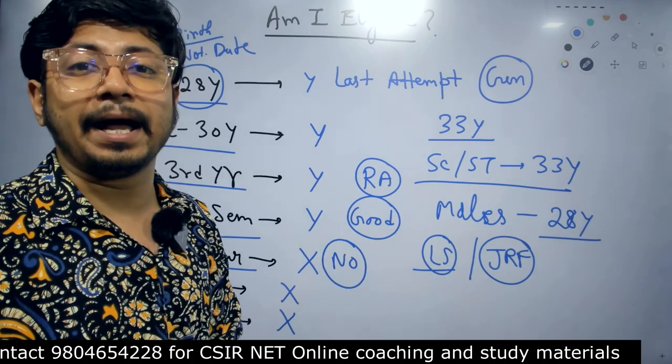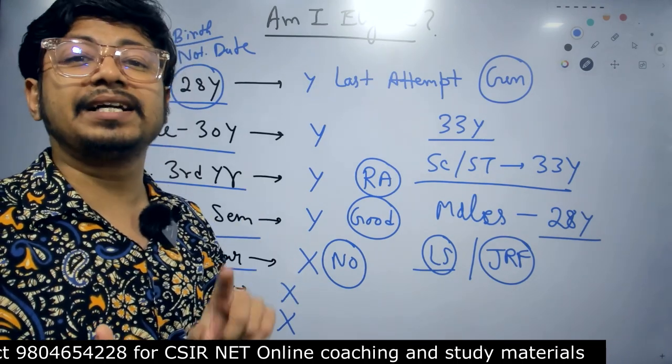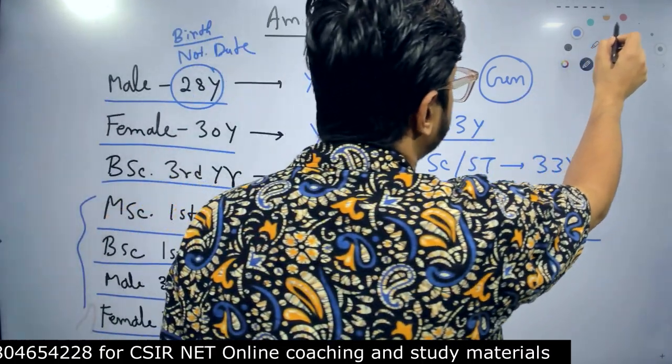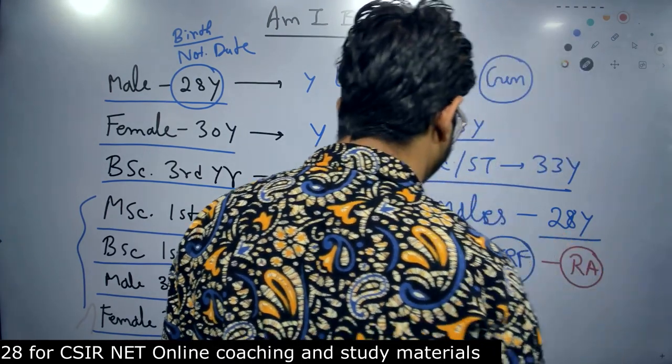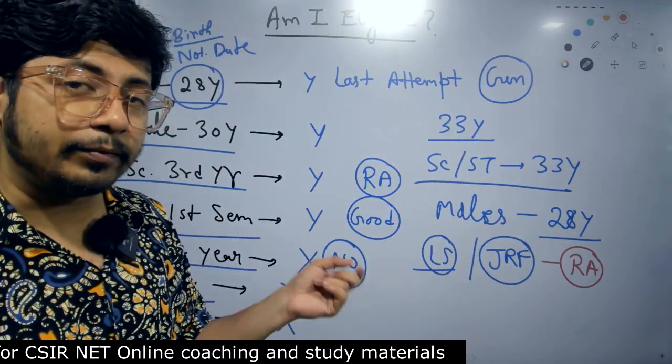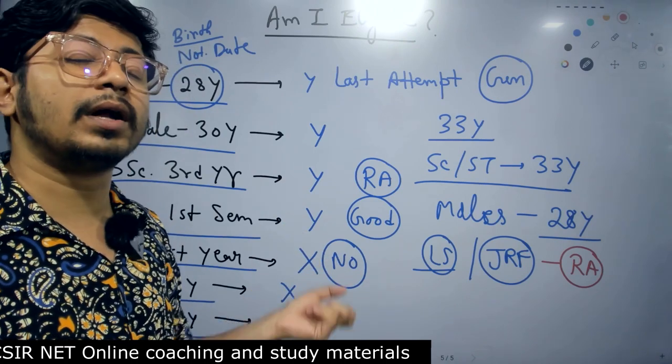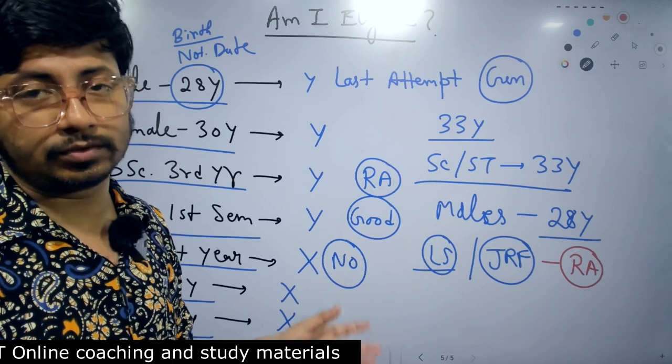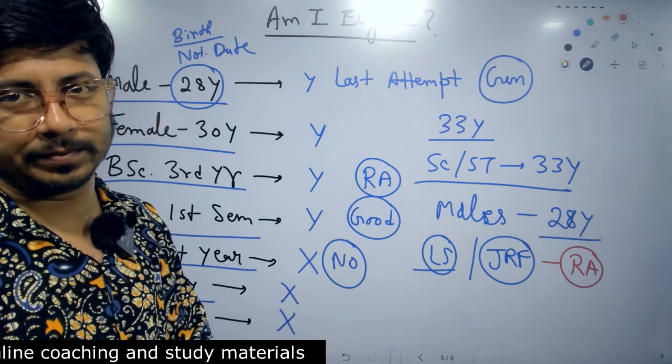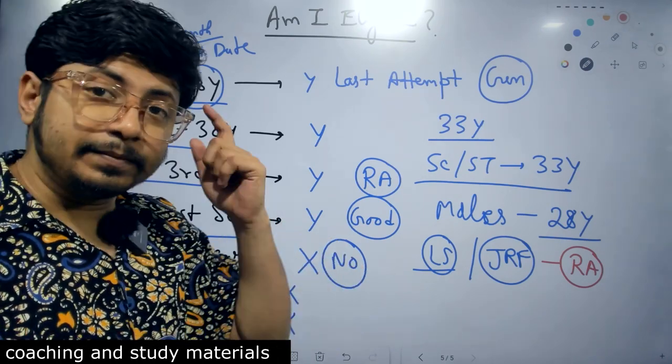JRF can be applied with the result awaited category. Let me write it down. It can be applied for RA, result awaited category. LS cannot be applied with result awaited category. LS can only be applied after completion of the degree. So after MSc, you will be eligible to apply for LS. Keep that in your mind.